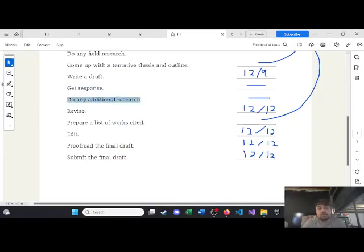Do any additional research. Who knows how long that could take. Revise. That could take a lot of time, depending on the response you get. Prepare your list of works cited. You already did the research, so you should have some sort of list, edit, proofread, and submit.